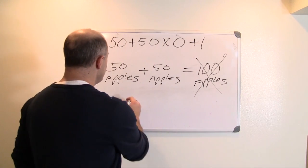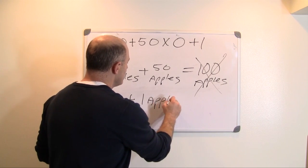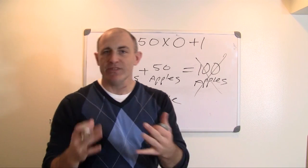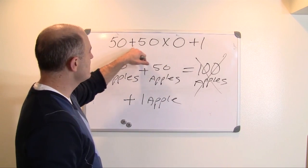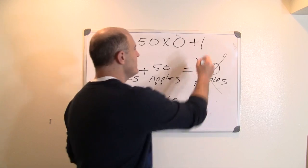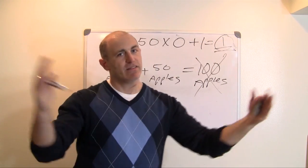And then you have the plus 1 apple. So, there you have it. Using apples as an example, the answer to the equation, 50 plus 50, times 0 plus 1, equals the number 1.